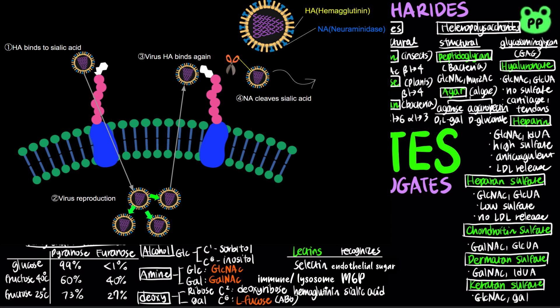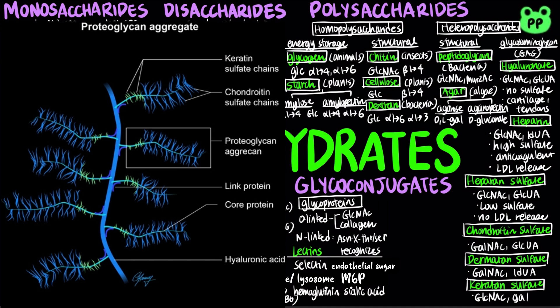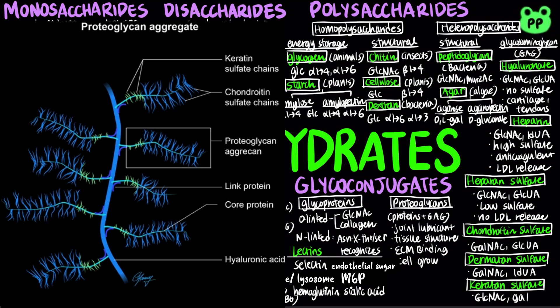Neuraminidases are viral enzymes that cleave sialic acid groups from glycoproteins. Therefore, neuraminidase inhibitors serve as antiviral agents that inhibit the viral activity of influenza virus. Proteoglycans are glycosaminoglycans covalently attached to core proteins. They serve as joint lubricants, contribute to tissue structure, binding of the extracellular matrix, and modulation of cell growth. Heparin-FGF, or fibroblast growth factor complex, prevents FGF from degradation. TGF-beta, or transforming growth factor beta, stimulates synthesis and secretion of proteoglycans.